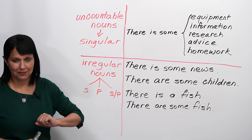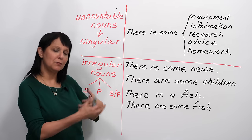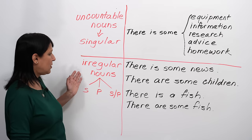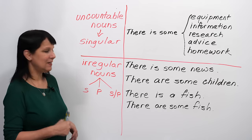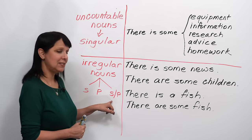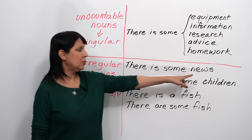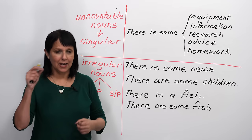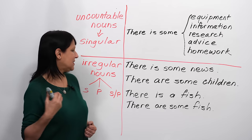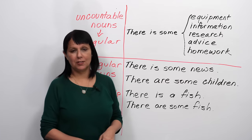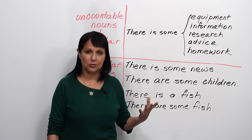Now let's look at irregular nouns, which are getting a little more complex. Sometimes they are singular, sometimes plural, and sometimes they could be either. For example, the word 'news' is always singular even though it ends with an S. It can be tricky because you see the S and think it's plural, but that's not true. So we say 'there is some news,' 'there's some good news,' 'there's some bad news.'